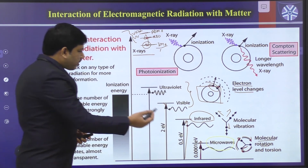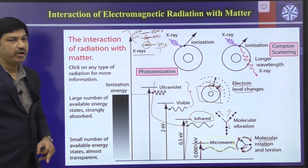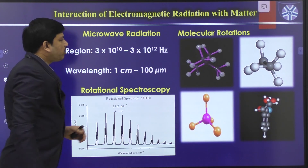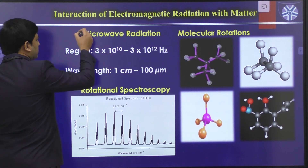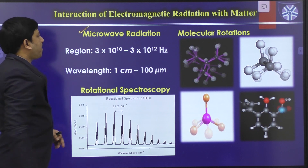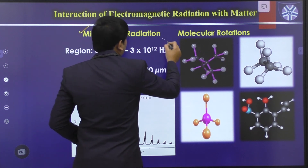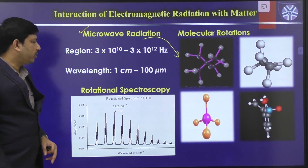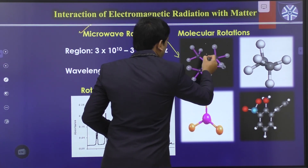In our syllabus, we focus only on two techniques: infrared spectroscopy and UV-visible spectroscopy. Let me explain what rotational changes mean. When microwave radiation is sent toward an unknown molecule, the molecule rotates. There is a bond axis, and the molecule rotates around that axis in this manner.